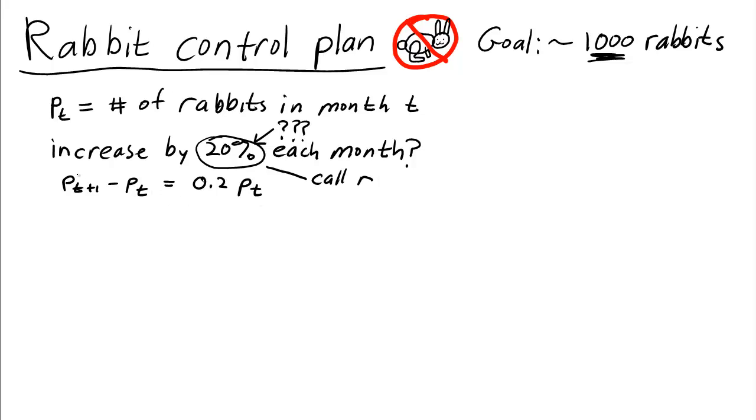And then, let's not use this equation here. Let's write it more generally. We could say that the rabbit population goes up by, let's say, a fraction r. Yeah, this is better. Let's use this. Because maybe r isn't 20%.